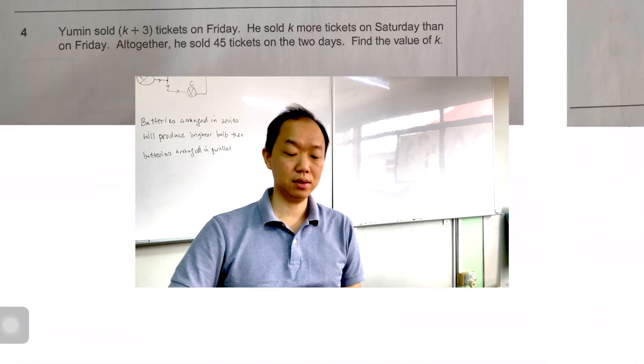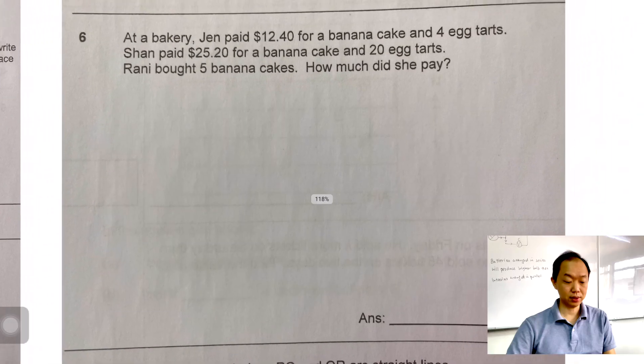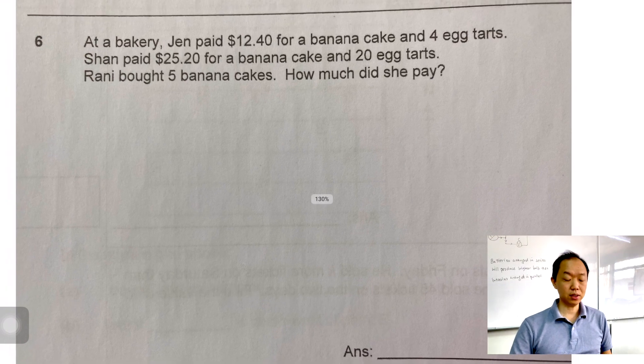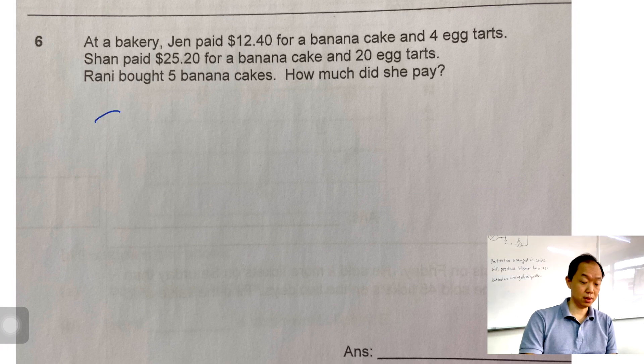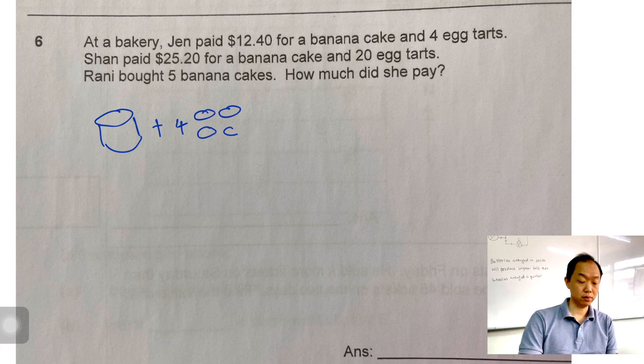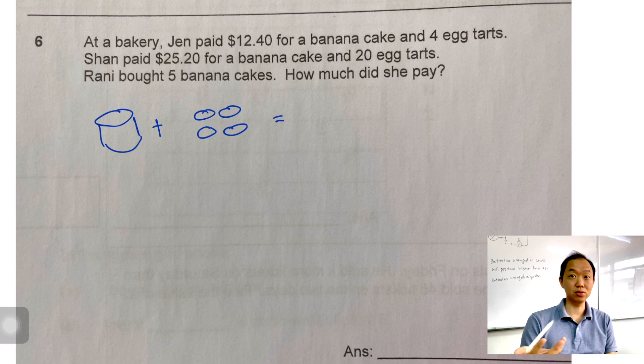Next, heuristic that was present in the 2019, let's do this one. At a bakery, Jan paid $12.40 for a banana cake and four egg tarts. Let's try to draw. So banana cake and four egg tarts, one, two, three, four. Let's just draw that. So the total cost is, of course, in the exam, you probably don't want to draw, but here I'm just drawing to illustrate the point. So this is $12.40.